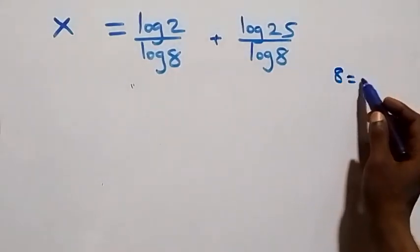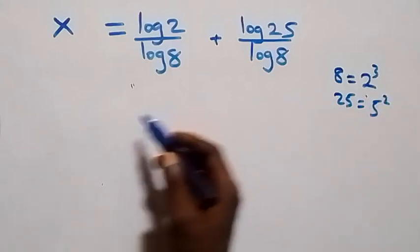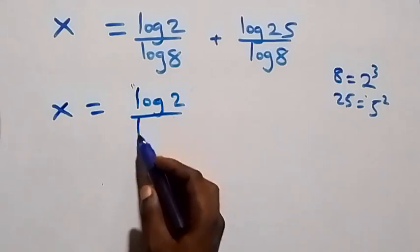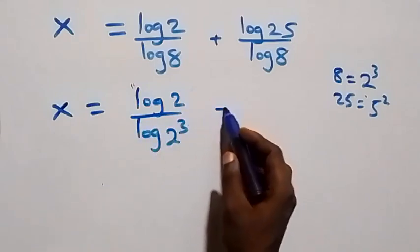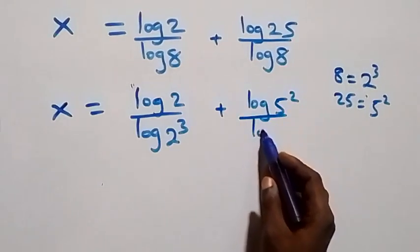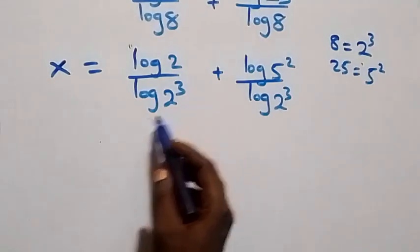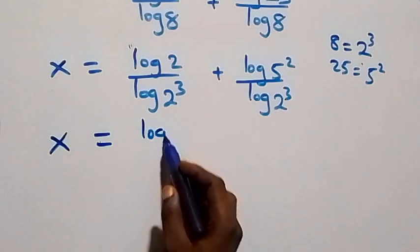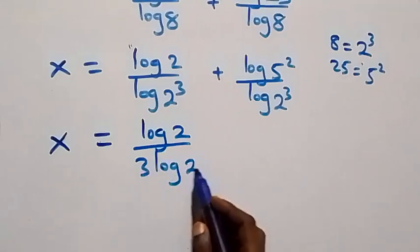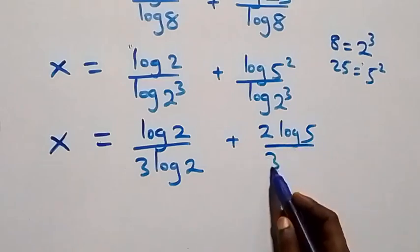From here we can express 8 as 2 times 2 times 2, which is 2 raised to the power 3, and also 25 as 5 times 5 which is 5 squared. So what we have here becomes x equals to log 2 over log 2 raised to power 3, plus log 5 squared over log 2 raised to power 3. We then apply the power law of logarithms, and what we have becomes x equals to log 2 over 3 log 2, plus 2 log 5 over 3 log 2.